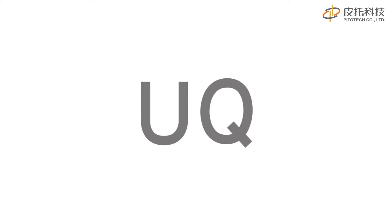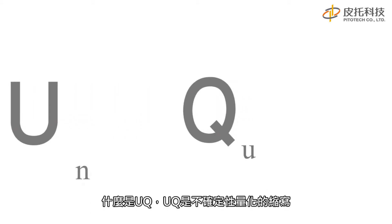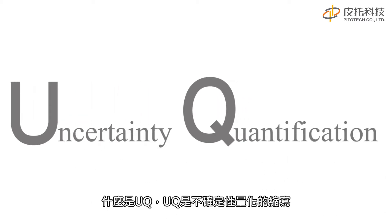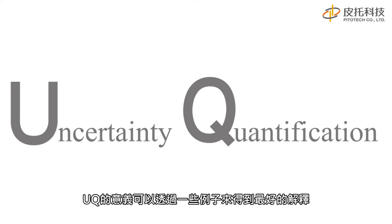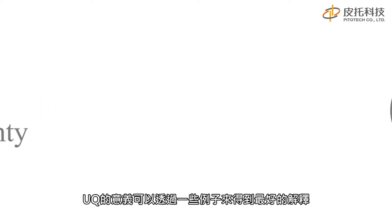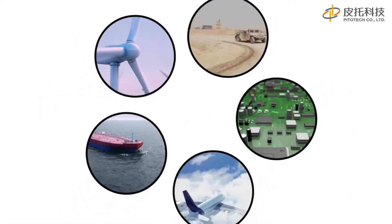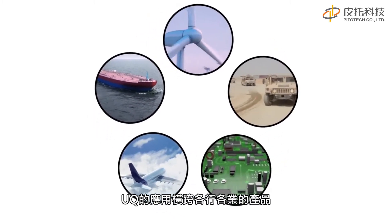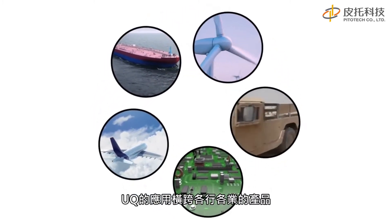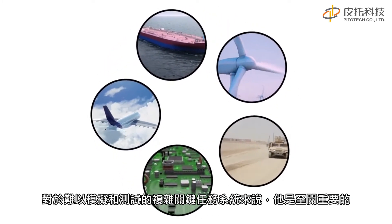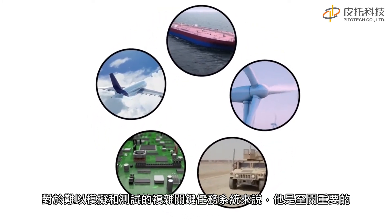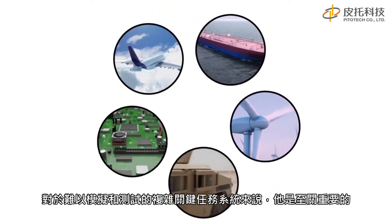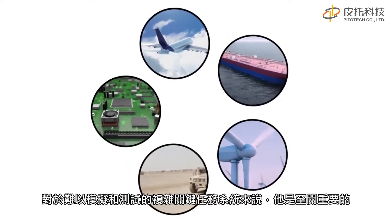What is UQ? UQ is short for Uncertainty Quantification. What UQ does can be best explained through an example. UQ is useful for products across many industries. It is crucial for complex, mission-critical systems that are hard to simulate and test.